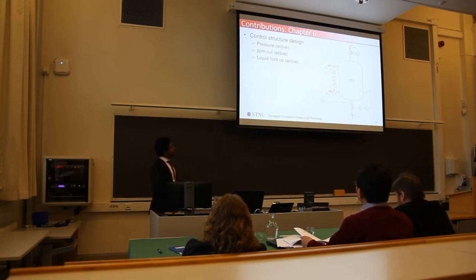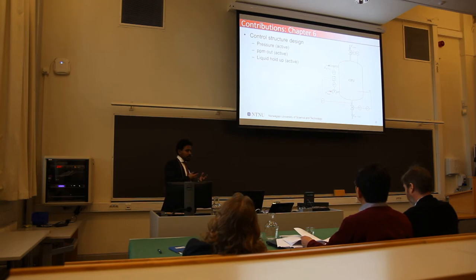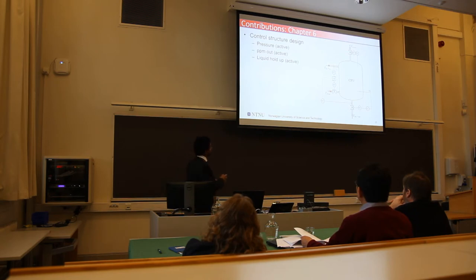So then, we talk about control structure design, and through this optimization, we found out that the pressure constraint is active, the PPM out constraint is active, and the liquid holdup is also active. Why so? Because the lower the pressure, the volume of the gas is going to be higher. So it's going to have effectively more number of bubbles. Higher the number of bubbles, better separation, so keeping the pressure as low as possible is more effective for the separation. That's why the pressure is active at the bottom constraint.